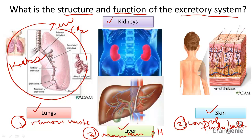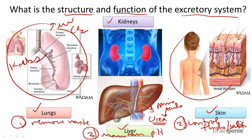Next, the liver does not excrete any substances from the body, but it's the location where amino acids are deaminated and where it forms something called urea — a waste that must be removed from the body. The skin excretes sweat, and sweat contains water, salts, and also urea that needs to leave the body.